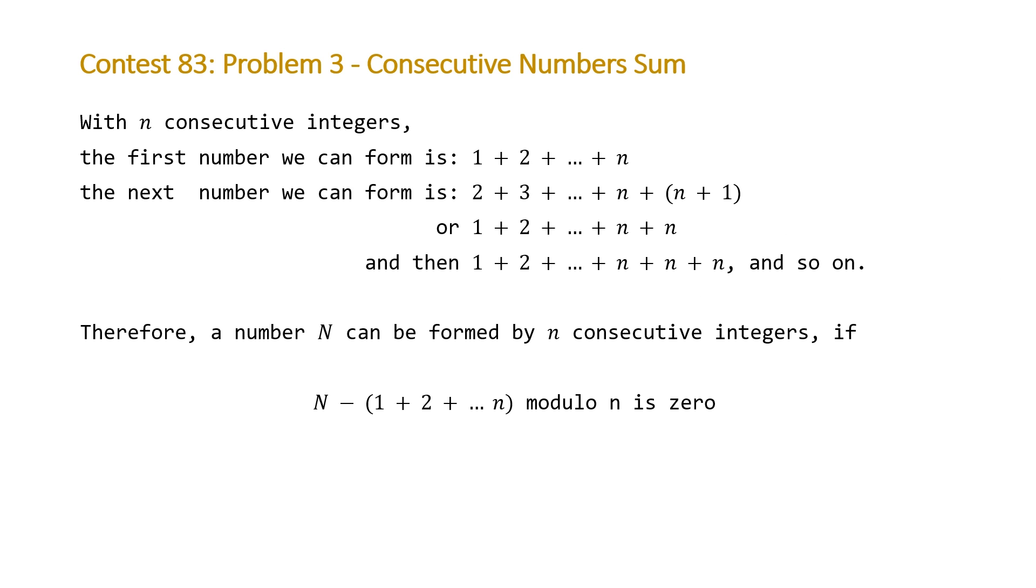The point being here is that for a given number, input N can be formed by N consecutive integers if the following is satisfied: our input value N minus (1 plus 2 plus N) modulo N is 0. If this is satisfied, then we know that one of the sums that we can form with N consecutive integers is going to be able to sum to this value N. We can just use our constant time formula to get this, and we'll be able to use this to code an alternative solution.